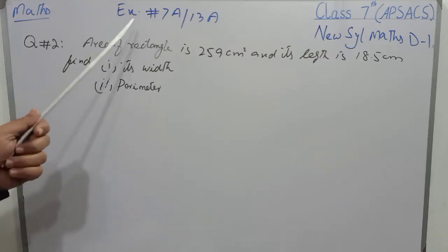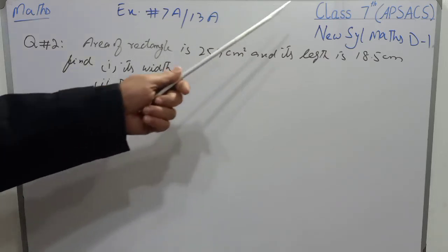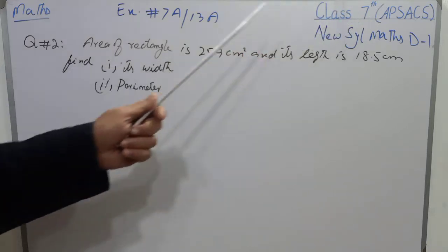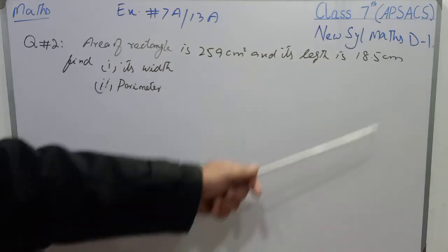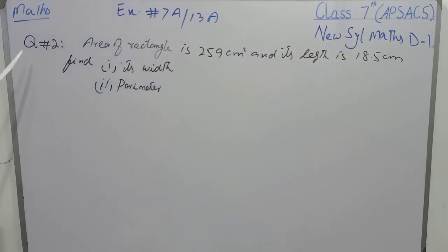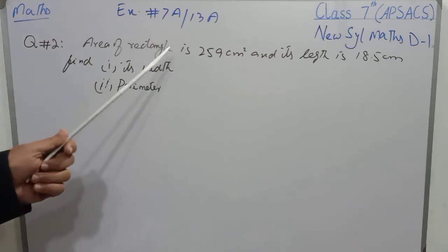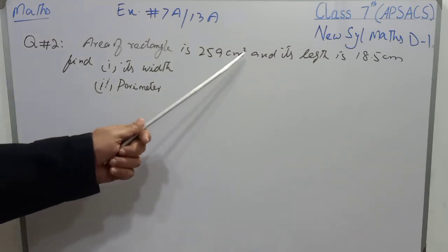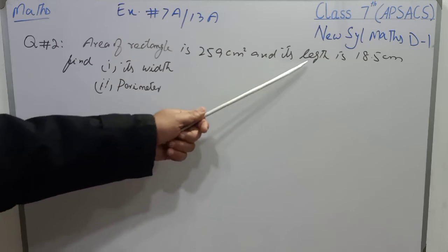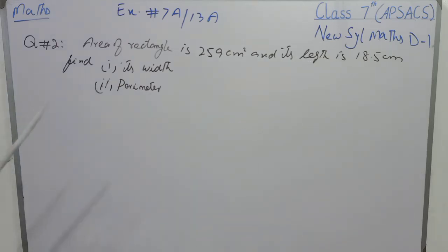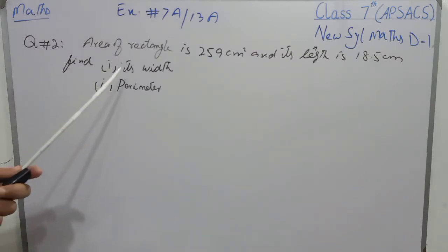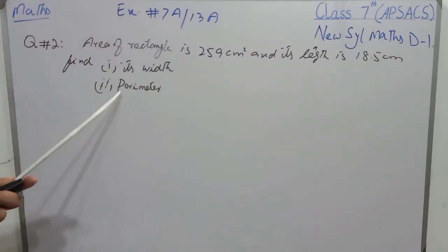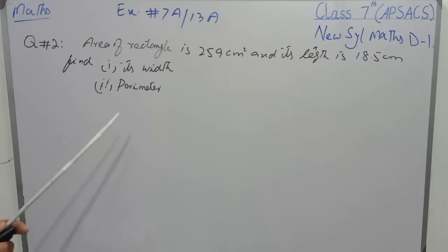Dear Students, Mathematics Exercise 7A for Class 7, and Exercise 13A, New Syllabus Mathematics. Question No. 2 of this exercise is: Area of a rectangle is 259 cm², and its length is 18.5 cm, and we have to find its width and its perimeter.